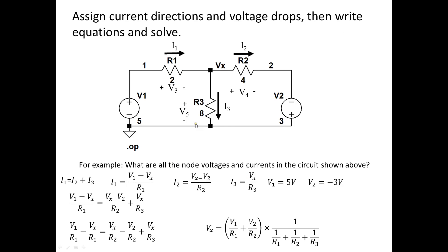Here's the circuit again, and we will assign current directions and voltage drops, write the equations, and then solve for Vx. So I have I1 going into the node, I have I2 and I3 leaving the node.